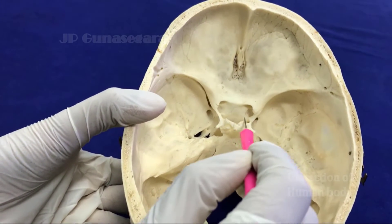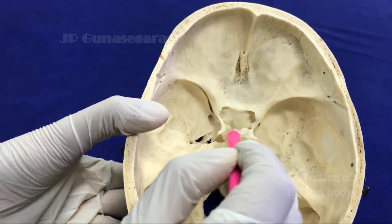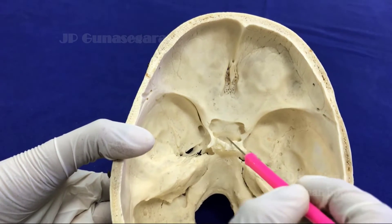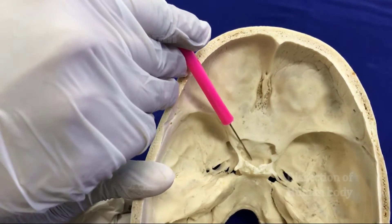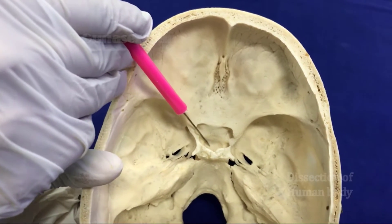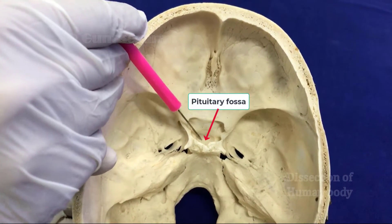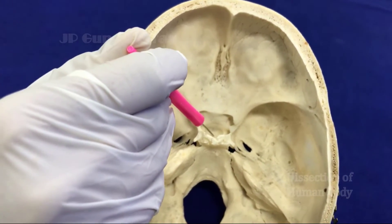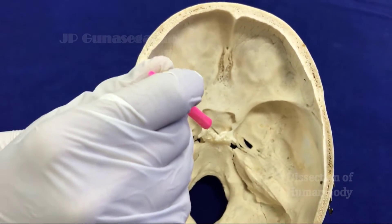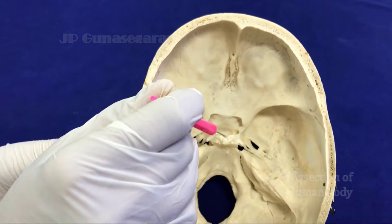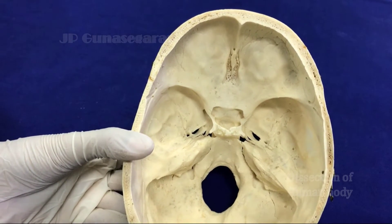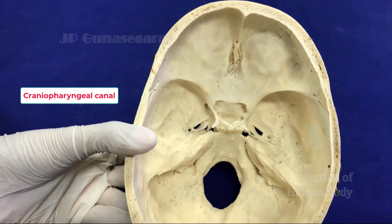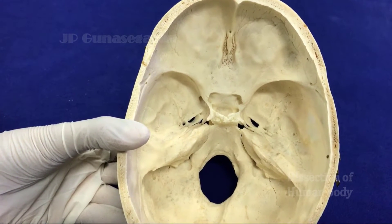The sulcus chiasmaticus is limited posteriorly by a linear transverse elevation called the tuberculum sellae. Behind the tuberculum sellae is a depression or fossa which lodges the pituitary gland, called the pituitary fossa or hypophysial fossa. In some skulls, the hypophysial fossa floor may be deficient, and there may be a canal communicating this fossa to the roof of the nasopharynx, called the craniopharyngeal canal, which represents the remnant of the Rathke's pouch that gives rise to the anterior pituitary.